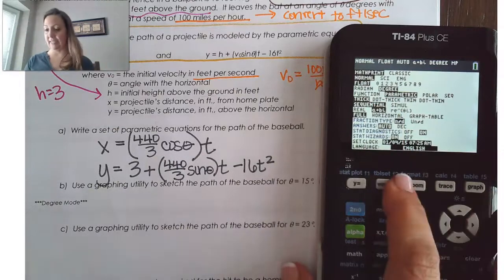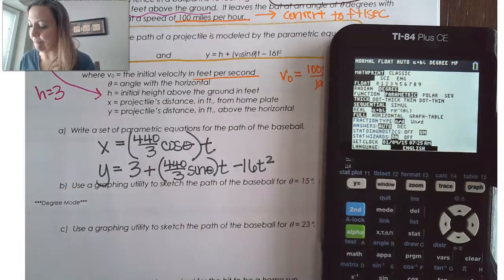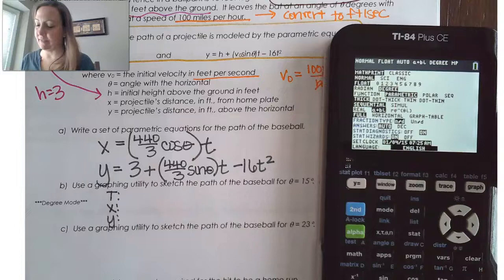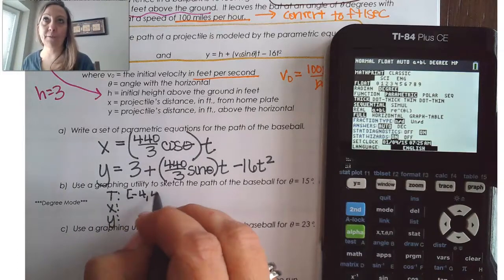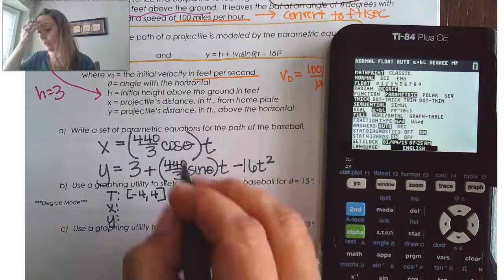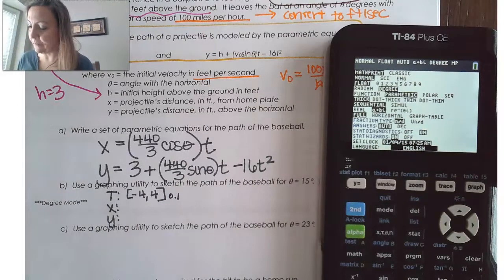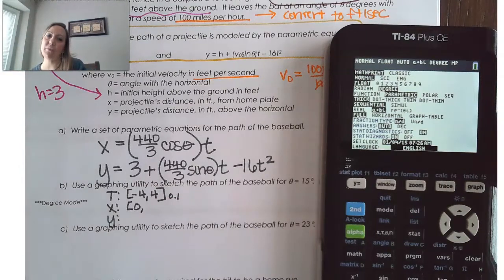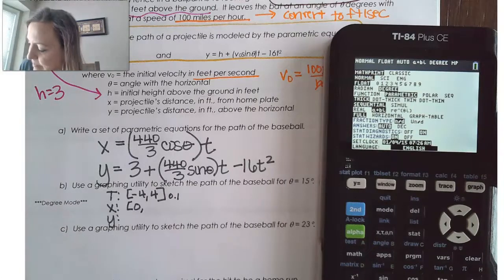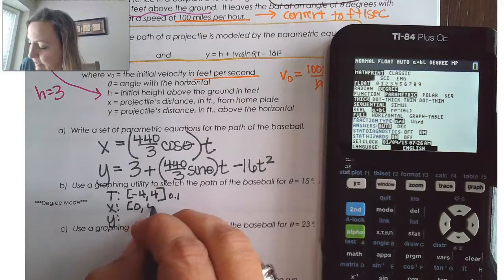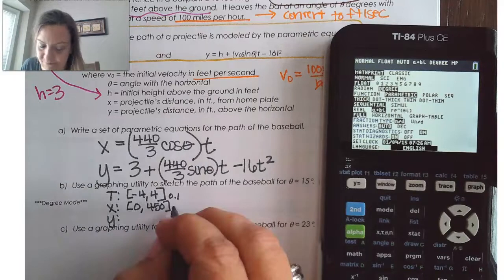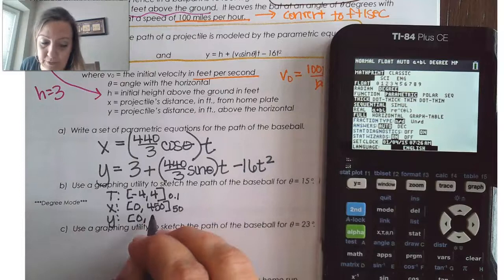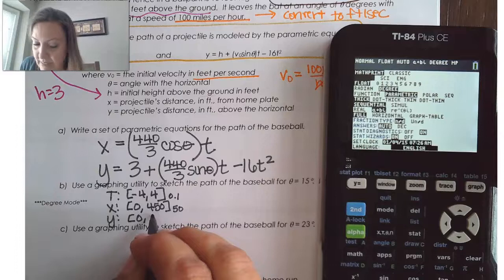And the other thing we might want to identify is our window. So, remember, for our window here, we're going to go from, we need a t. And some negatives and positives are nice. So, maybe since I'm doing it in the calculator, I'll go from negative 4 to 4. Remember, a smaller t-step is more accurate. So, maybe I'll use 0.1 as my scale there. For x is how far from home plate it's going to be. So, in context, it's just going to be zero. And for it to be a home run, we said it had to be 400 feet. So, maybe something more than that. Maybe I'll go to 450. And if I was going to 450, my scale might be something like 50. And then my y is going to be how high above the ground it is. I'm going to go zero to 50 feet. And I'll go by fives.